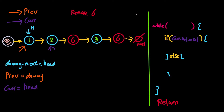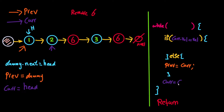In the else section, we set previous equal to current, advancing the previous pointer to where current was. Outside the if-else block, we advance current with current = current.next, because we always need to advance current regardless of whether we remove the node or not. Now current is at node 2. Does 2 equal 6? No — advance previous to 2 and advance current to node 6.